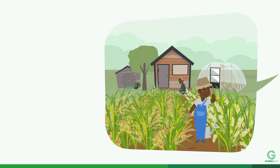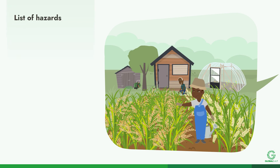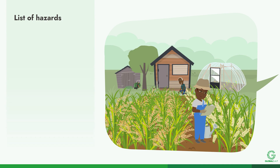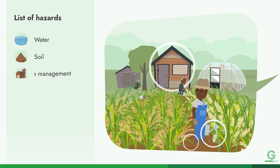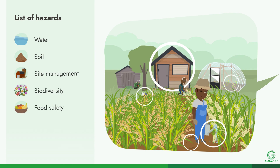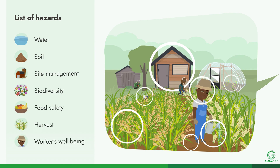A good first step in preparing a risk assessment is to write down a list of hazards present on your farm, section by section, as required by the respective Global Gap standard and add-on. For example: water, soil, site management, biodiversity, food safety, harvest, and workers' well-being.